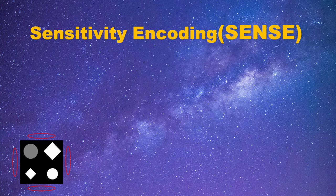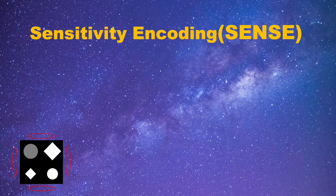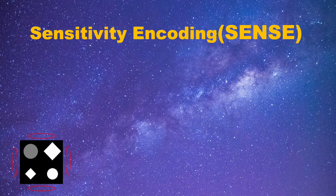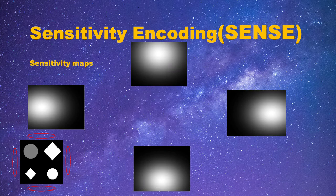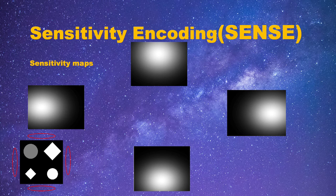For example, the coil on the left will be better at acquiring signals from the left part of the object. We can use these images to get a separate image called the sensitivity map. The sensitivity maps describe where this coil can acquire more signal at the whole field of view.